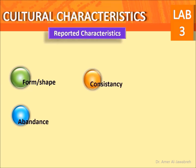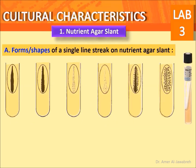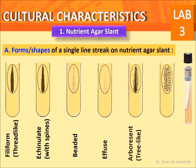On a nutrient agar slant, the forms of a single line streak include: filiform (thread-like), crenate (with spines), beaded, effused, arborescent (tree-like), and rhizoid or filamentous.